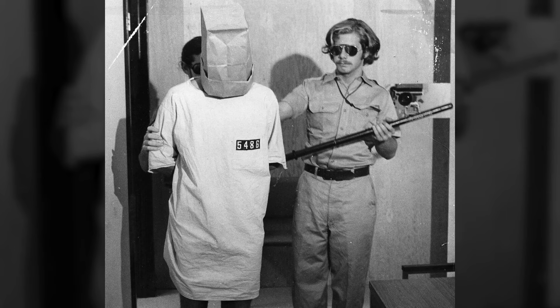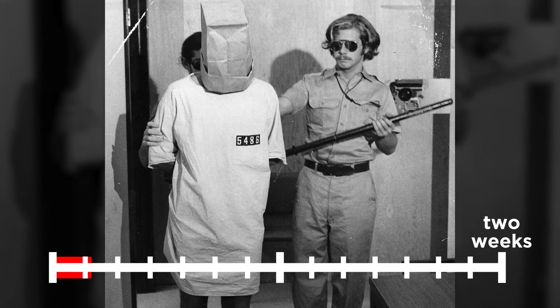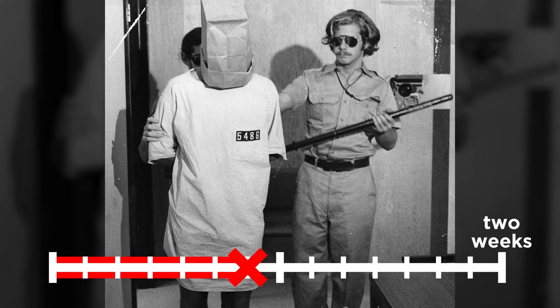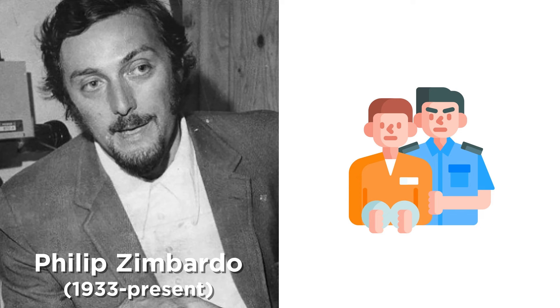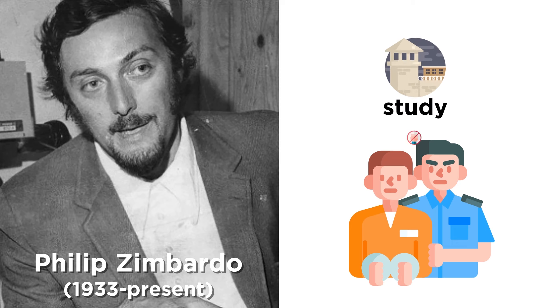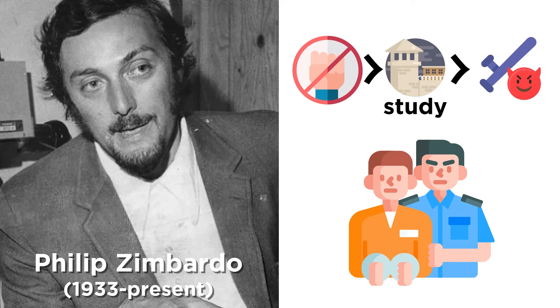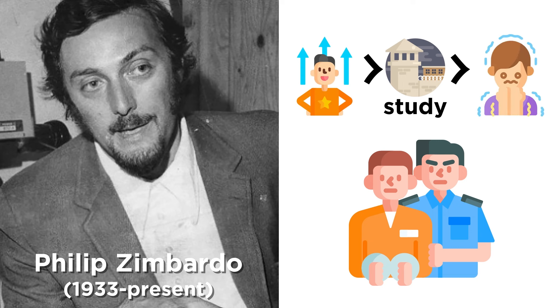The experiment was originally planned to go for two weeks, but it was ended after only six days. In this timeframe, multiple prisoners had emotional breakdowns, and guards were excessively aggressive to the point of abusing the prisoners. Zimbardo and his colleagues were surprised at how quickly the participants fell into their roles and changed their behavior. None of the guards had shown any sadistic tendencies before the study, yet they rapidly descended into brutal behavior. Prisoners were also much more submissive than personality tests would predict. The situation of being in a prison environment dramatically impacted the behaviors that the participants exhibited.